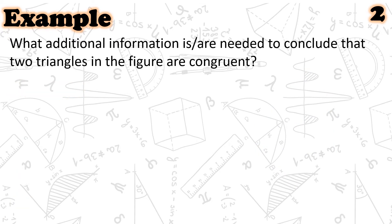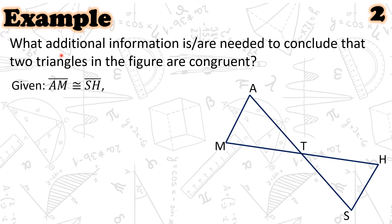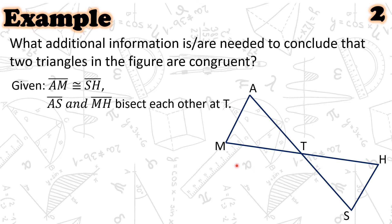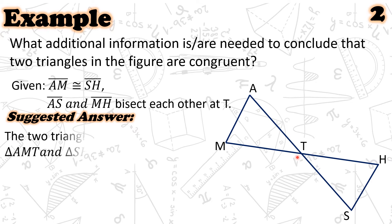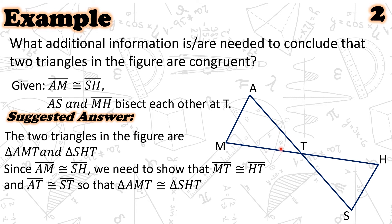Let us have example number two. What additional information is needed to conclude the two triangles in the figure are congruent? We are given segment AM is congruent to segment SH. Also, segment AS and segment MH bisect each other at point T. For our suggested answer, we need to show that segment MT and segment HT are congruent, and also segment AT and segment ST are congruent, so that triangle AMT and triangle SHT are congruent by the SSS postulate.